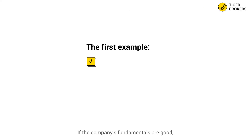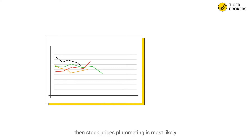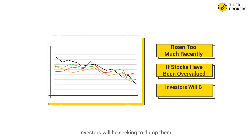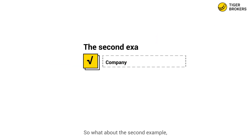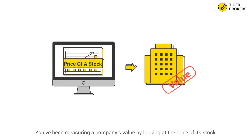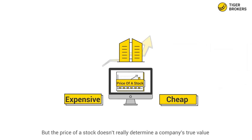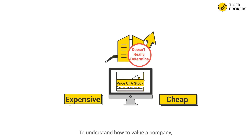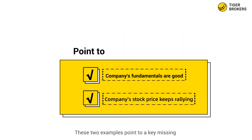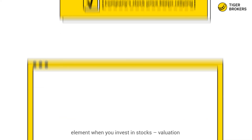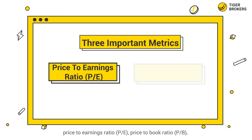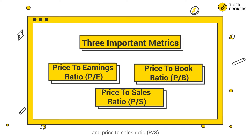Let's take a look at the first example. If the company's fundamentals are good, then stock prices plummeting is most likely because they have risen too much recently. If stocks have been overvalued, investors will be seeking to dump them. In the second example, when a company's stock price keeps rallying, you've been measuring its value by looking at the stock price — but the price of a stock doesn't really determine a company's true value. To understand how to value a company, you need to understand valuation. These examples point to a key missing element: valuation. I'll explain it using three important metrics — price-to-earnings ratio, price-to-book ratio, and price-to-sales ratio.